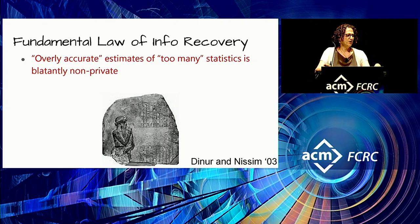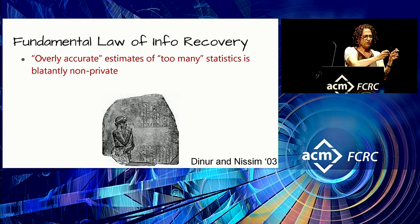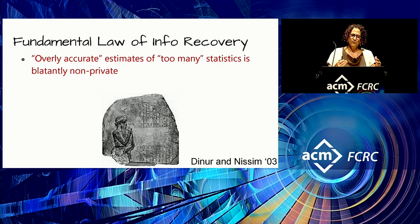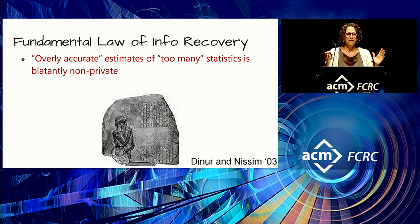More generally, what has come to be known as the fundamental law of information recovery tells us that if you have overly accurate estimates of too many statistics, you can completely destroy privacy. If you ask many questions, you have to add a lot of noise to the answers to avoid completely compromising privacy. If you ask fewer questions, you need less noise. This result of Dinur and Nissim applies to any method of privacy protection — it has nothing to do with differential privacy; this is just the math.